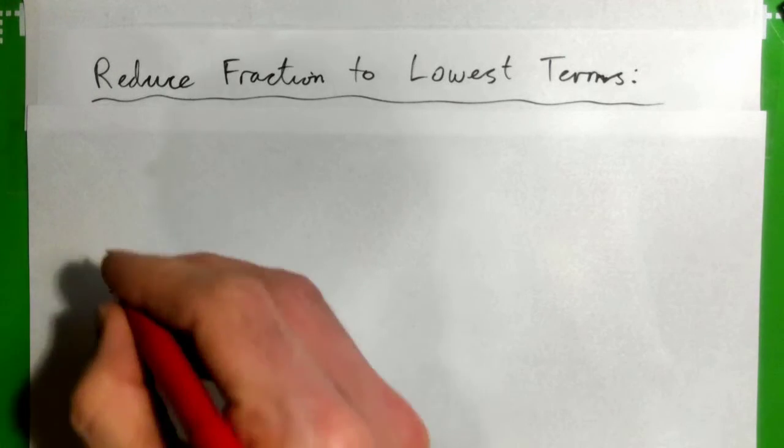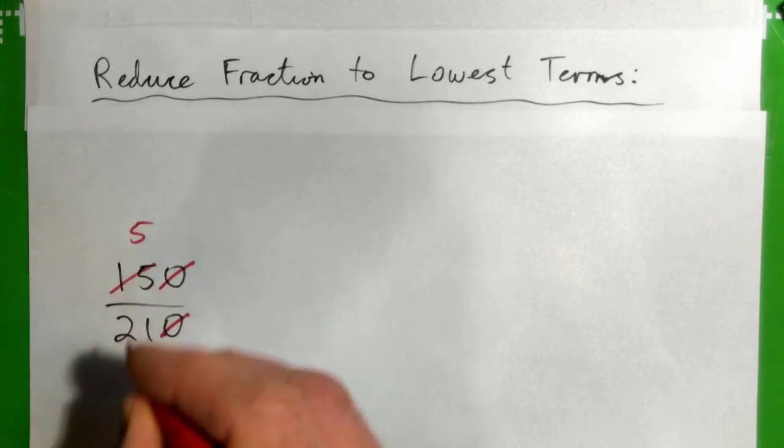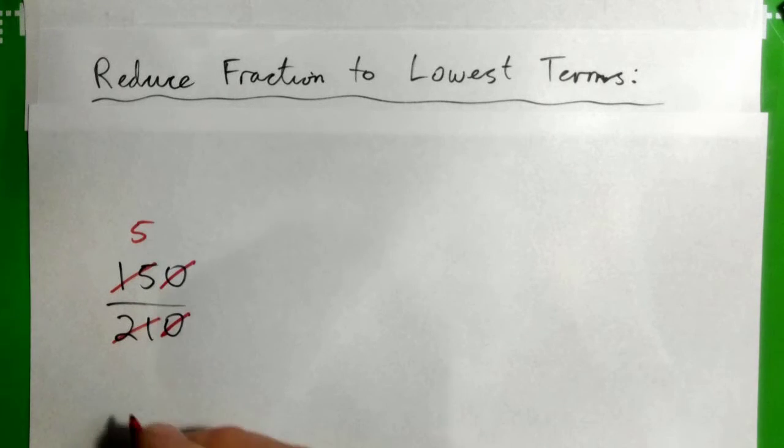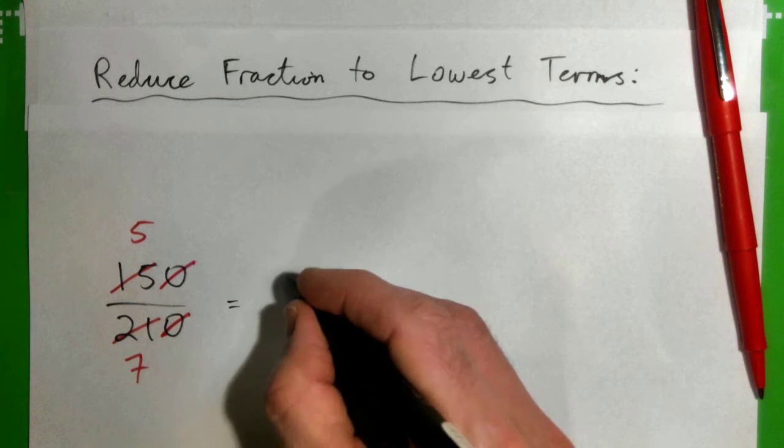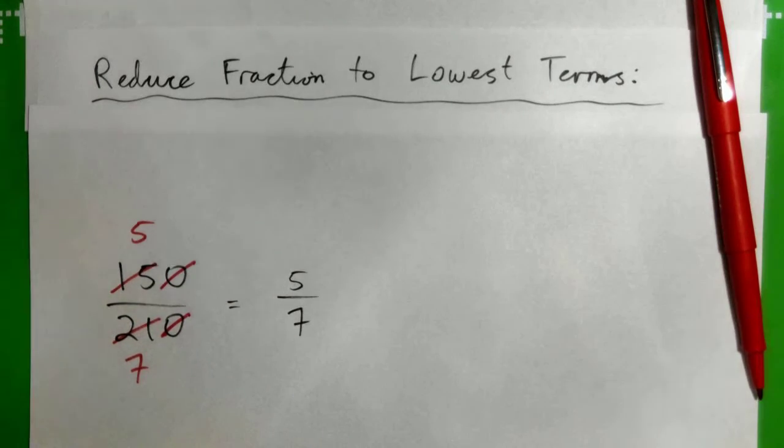3 goes into 21 seven times, so the whole thing becomes 5 over 7. Perfect. Great job!